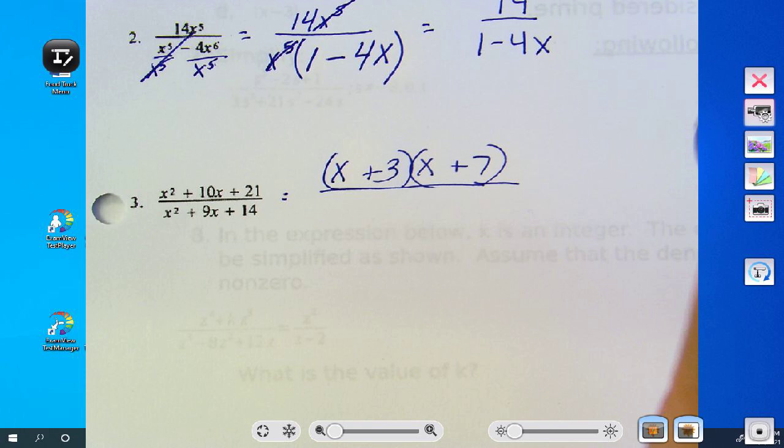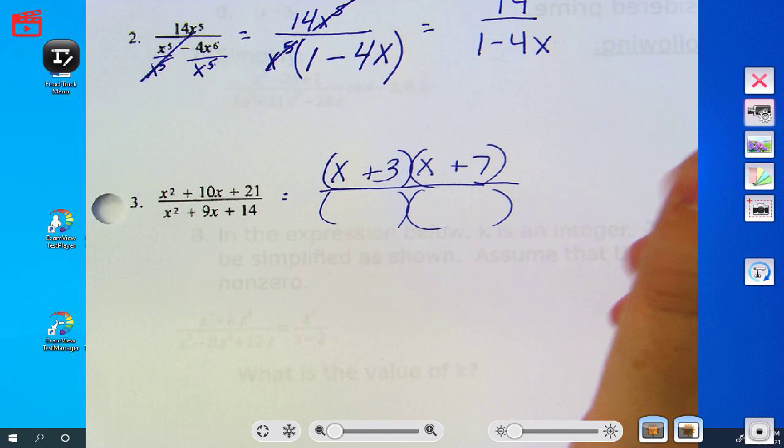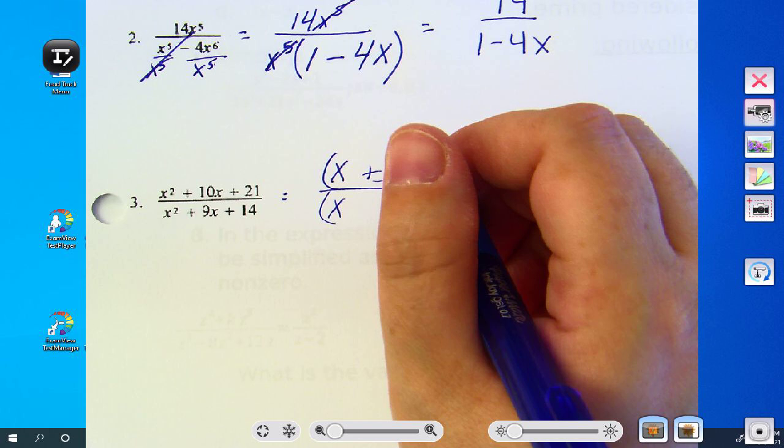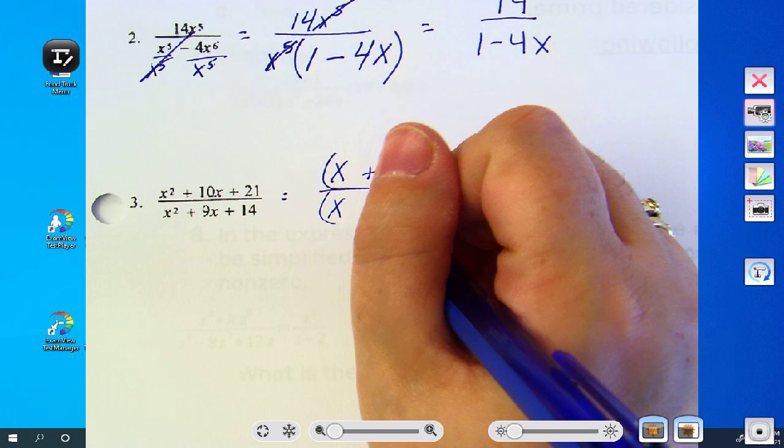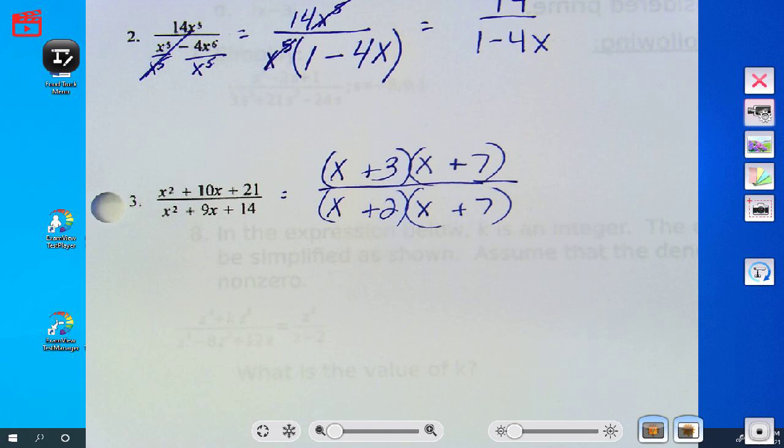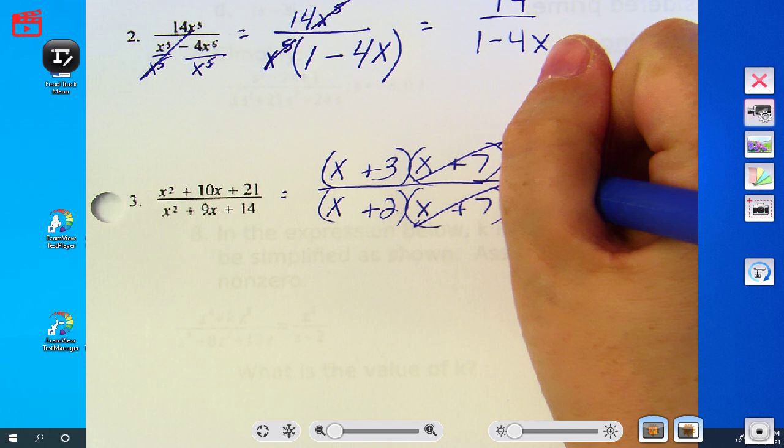All right, denominator, there's no GCF, but we can find factors of 14 to add up to 9. What did you find? That's fine. Two and seven. What do you see that's in common? The x plus sevens. Okay, so you have left x plus three over x plus two.